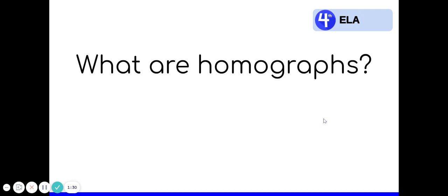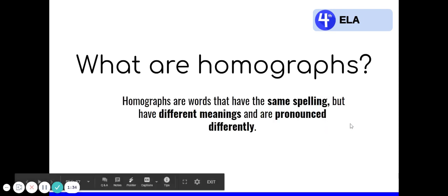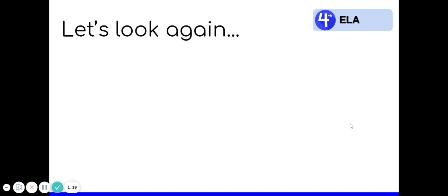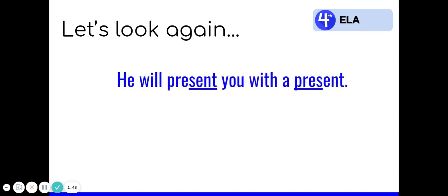Homographs are words that have the same spelling, but have different meanings and are pronounced differently. So let's look at that sentence again. He will present you with a present. With the first homograph, we have present. Present, that is something he's doing, an action. So present is a verb. And the second, present, that's a thing, which is a noun. We stress different syllables, but both the S in both words stay with the accented syllables. So you'll notice I've underlined sent and pres. So we say present and present. So the different syllables kind of help us determine if it's a noun or a verb and how to read it.